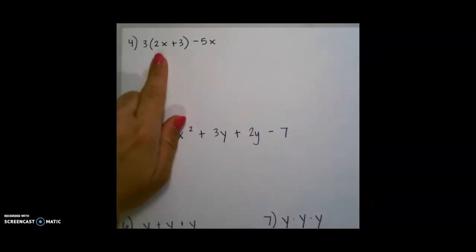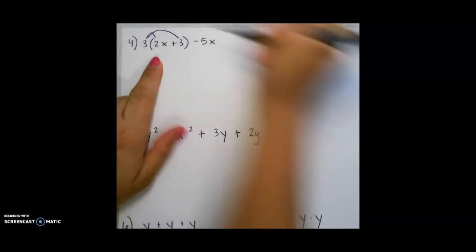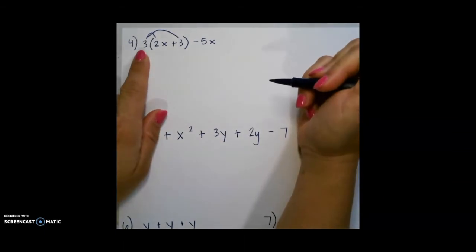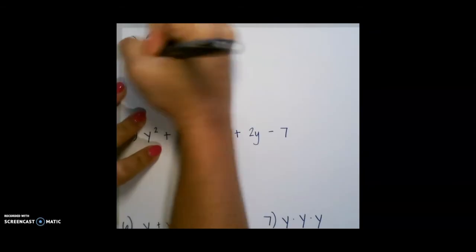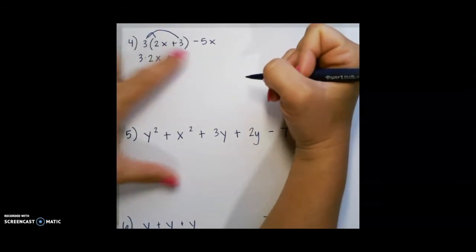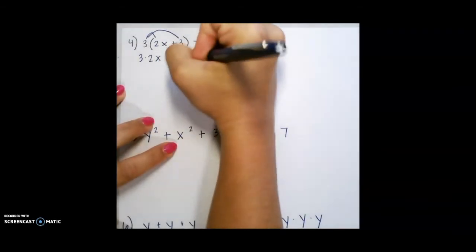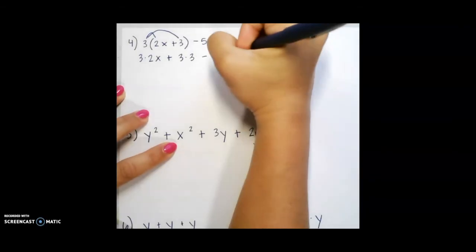For our next example, again we see parentheses where we will need to use distributive property. I am going to distribute or multiply the number on the outside of the parentheses to everything on the inside of the parentheses. 3 times 2x, with a plus sign in the middle, and 3 times 3. This term can just be brought down and we will use it later.